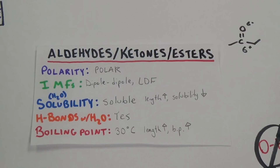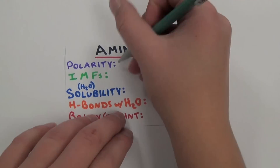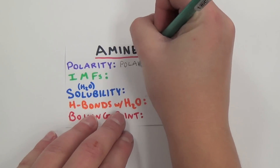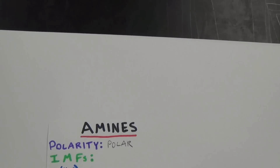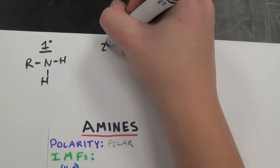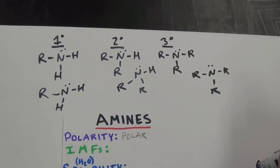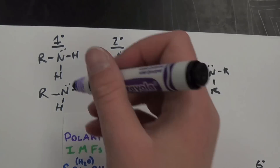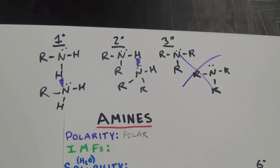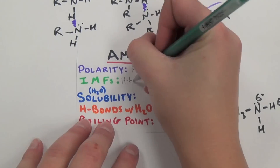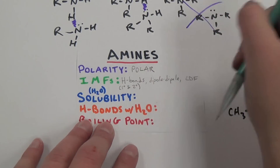Next up: amines. Amines are polar due to their carbon-nitrogen and hydrogen-nitrogen bonds. First and second degree amines have stronger intermolecular forces than third degree amines because the nitrogen-hydrogen bond means they are able to form hydrogen bonds with themselves. This ability of first and second degree amines makes them more polar than aldehydes, esters, and ketones.